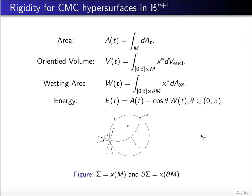There are several geometric quantities we want to consider. The area function is the area of the hypersurface sigma. The oriented volume is defined as the volume of omega in the embedded case. The wetting area is defined similarly, and in the embedded case it is the area of the region t. The energy function E is given by the area of sigma minus cosine theta times the wetting area.